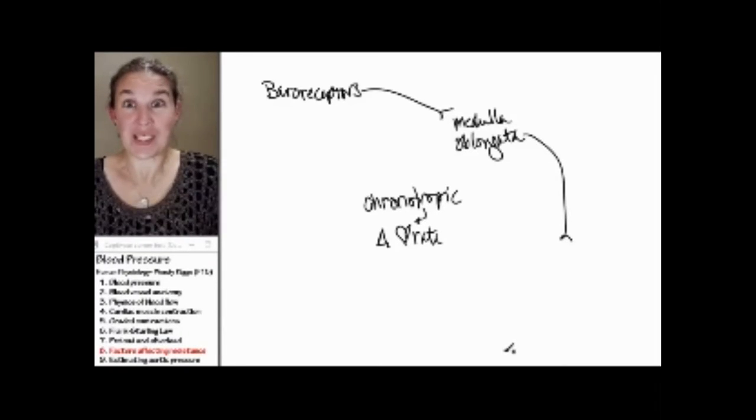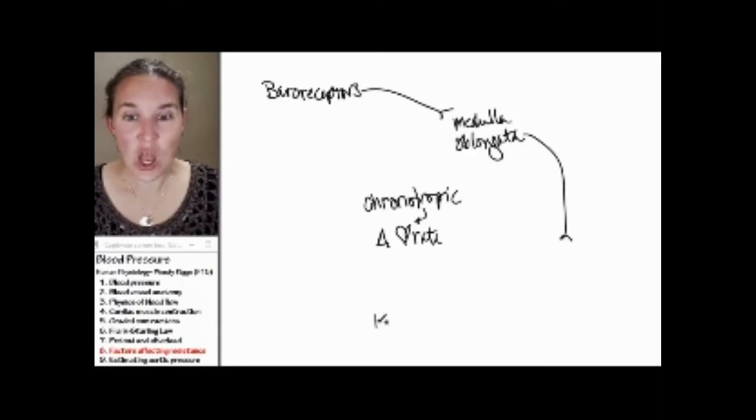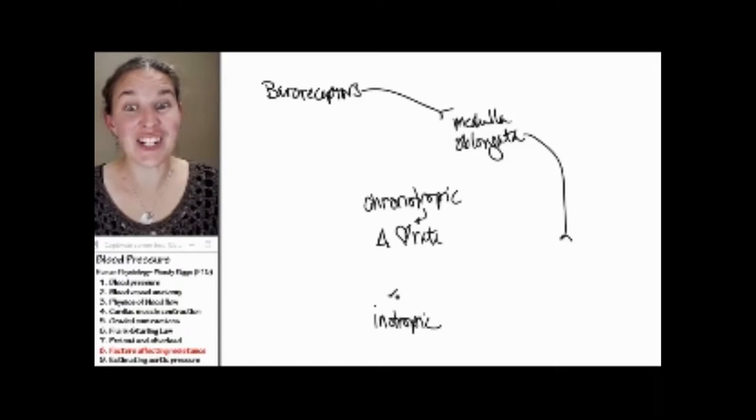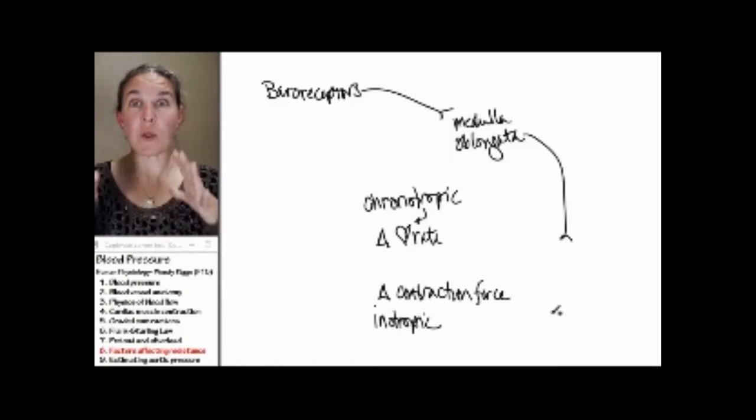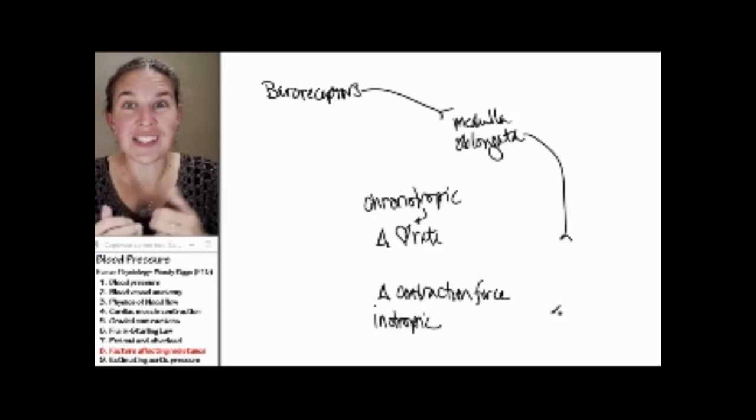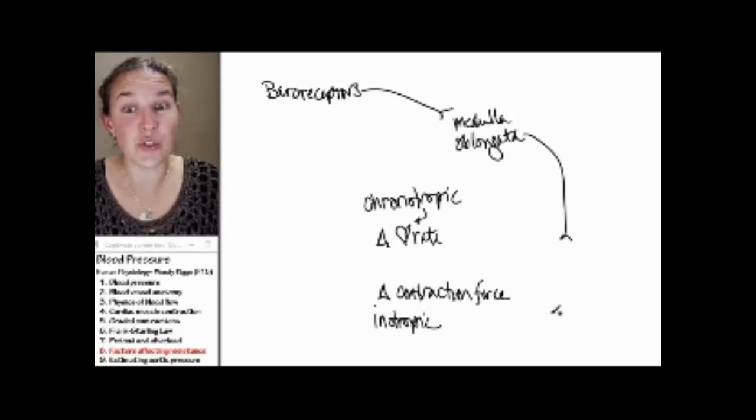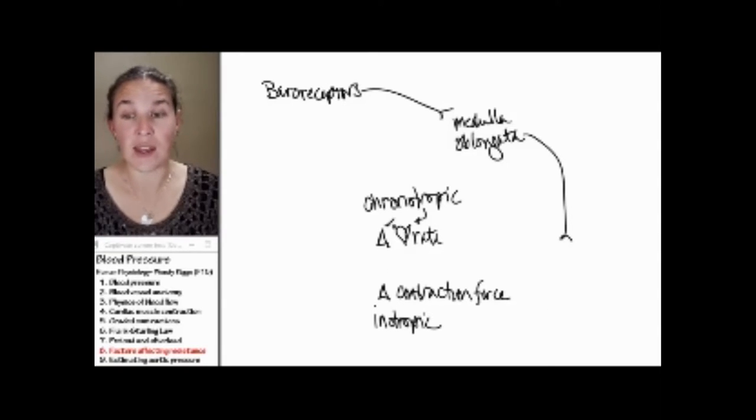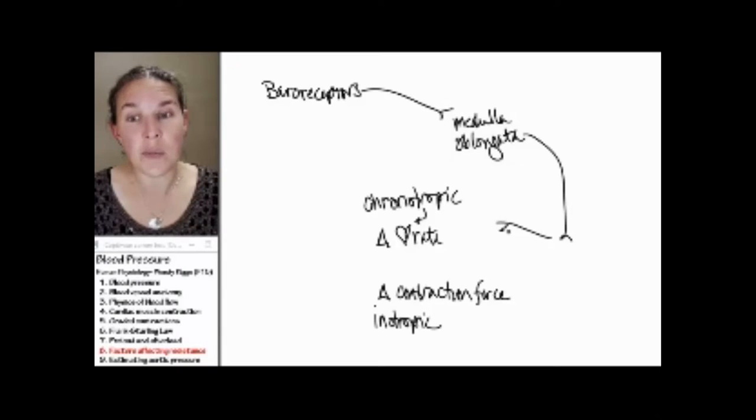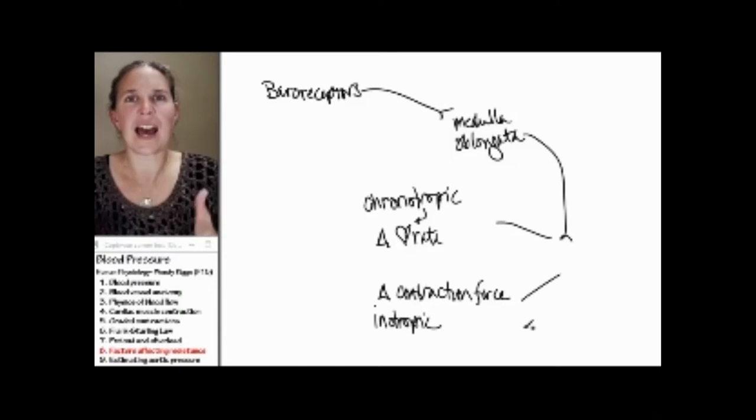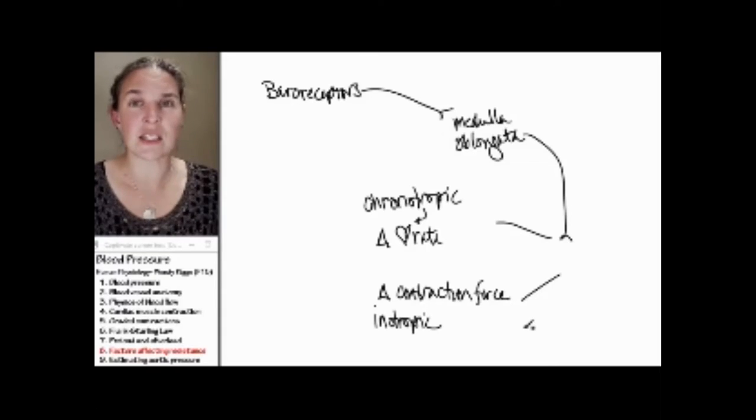As opposed to, what's something else we could change? We could be an inotropic substance and change contractility or force of contraction. I like force better. So we can change the contraction force. Inotropic substances will do that. Or we can change the heart rate. Chronotropic substances will do that. Those are two options.